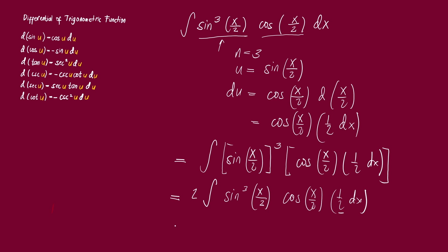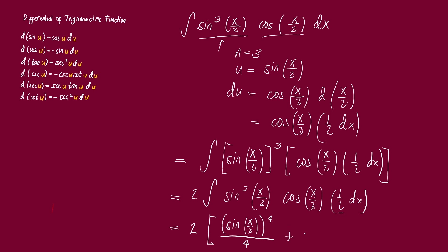We now apply the right side of the power formula for integration. We copy the 2 because it is outside the integral. The right side gives u raised to n+1 over n+1 plus C. So this is sine of x/2 raised to n+1, where n = 3, so n+1 = 4, over 4, plus C. Don't forget the plus C.